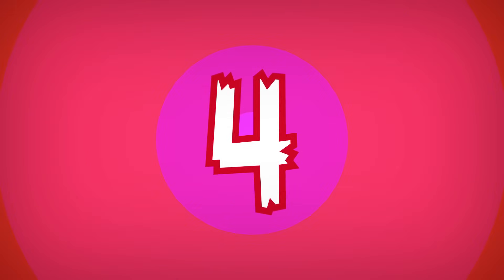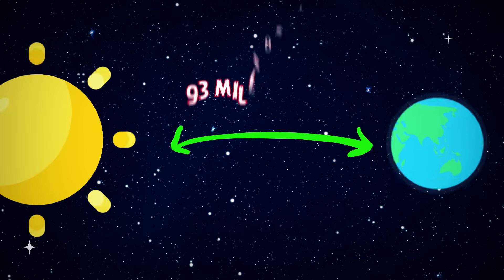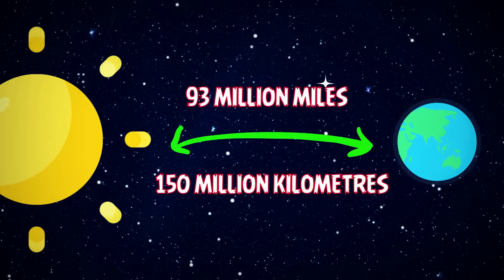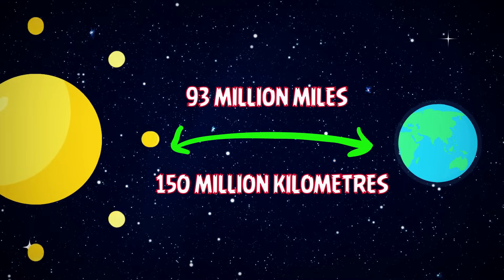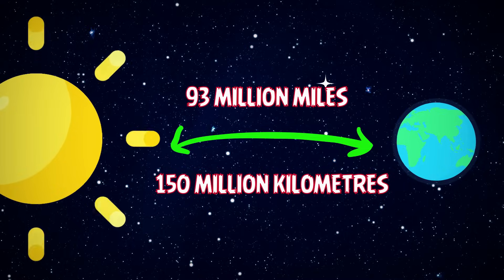Number 4. The Earth is 93 million miles or 150 million kilometers from the Sun.